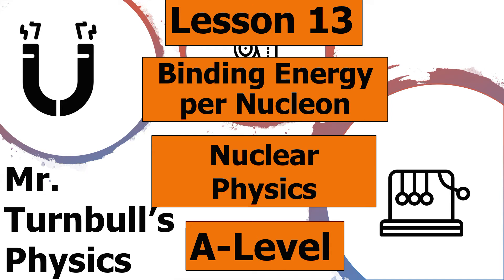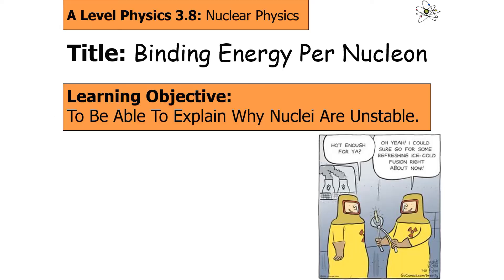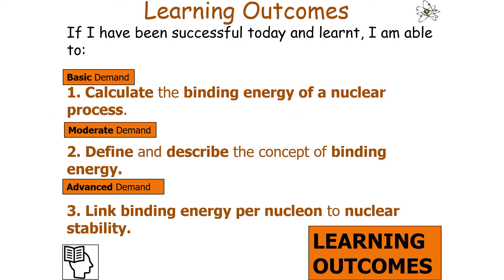Hello and welcome to this lesson on binding energy per nucleon, which is part of the nuclear physics topic in AQA A-level physics. In today's lesson we're going to try and explain why some nuclei are unstable. By the end we should be able to calculate the binding energy of a nuclear process and define and describe the concept of binding energy.